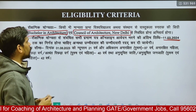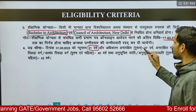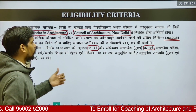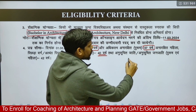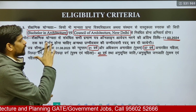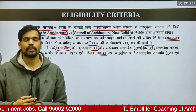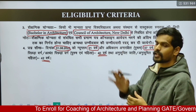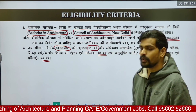The second part of eligibility is the age criteria. The minimum age is 21 years. The maximum age for unreserved male candidates is 37 years; for women candidates and extremely backward class and backward class candidates it is 40 years; for Scheduled Caste and Scheduled Tribe candidates it is 42 years. The cutoff date for age criteria is 1st August 2023.